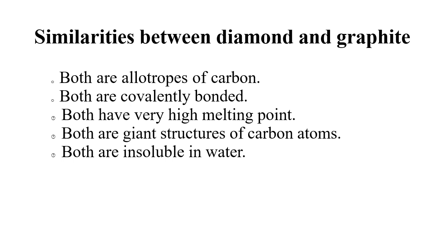Let's continue by talking about the similarities between diamond and graphite. Both are allotropes of carbon. Another similarity: both are covalently bonded. Remember, a covalent bond is a kind of bond formed between two non-metals. Both have a very high melting point. Both diamond and graphite are a giant structure of carbon atoms. Both are insoluble in water.